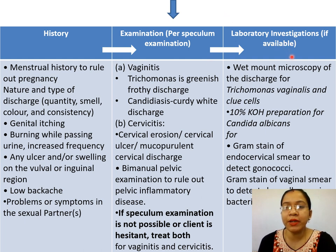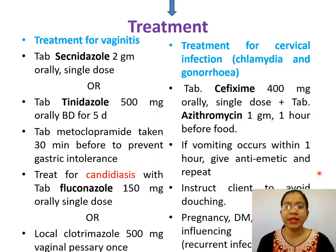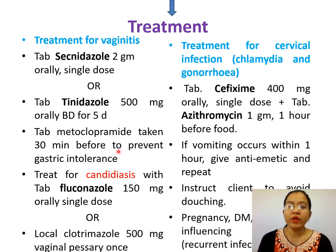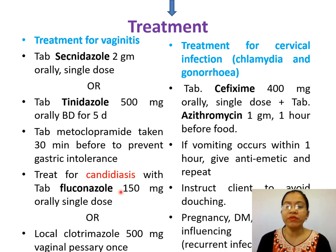If lab investigations are available, do wet mount microscopy of discharge for Trichomonas vaginalis to look for clue cells, and 10% KOH preparation for Candida albicans, and Gram stain for detecting gonorrhea. Treatment: for vaginitis, give tablet secnidazole 2 g orally single dose, or alternatively trinidazole 500 mg orally twice daily for 5 days. If there is vomiting, give metoclopramide 30 minutes before. For candidiasis, give fluconazole 150 mg orally single dose, or clotrimazole pessary 500 mg once. So the combined treatment is tablet secnidazole 2 g orally single dose with fluconazole 150 mg orally single dose.